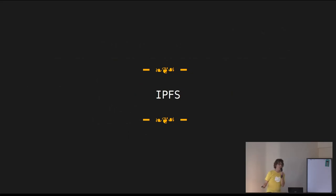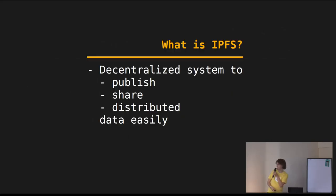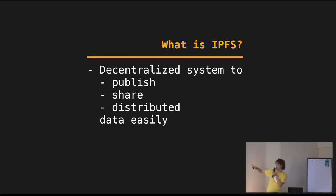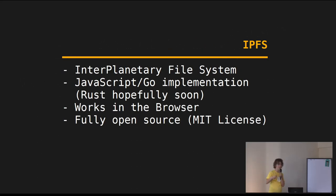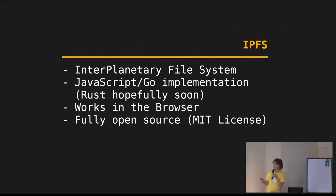So I haven't talked about IPFS yet and we have five minutes to go. IPFS is exactly such a system that does those things. It is a decentralized system to publish and distribute data easily. It is like a virtual file system — therefore the FS — because it stands for Interplanetary File System. There are implementations in Go and JavaScript. The exciting thing about JavaScript is it works in the browser. Hopefully there will be a Rust implementation soon as well. It is fully open source with an MIT license.